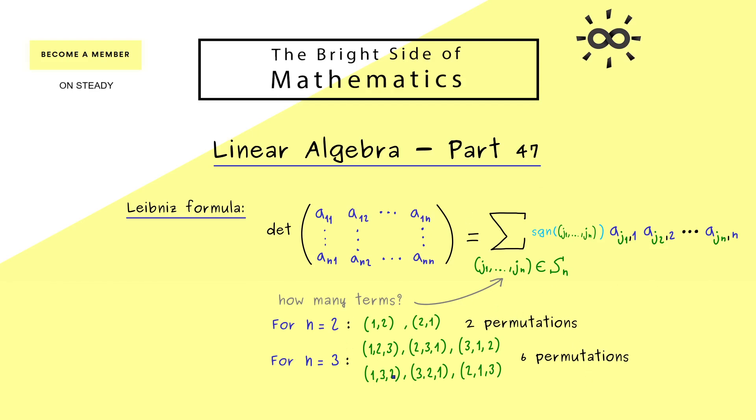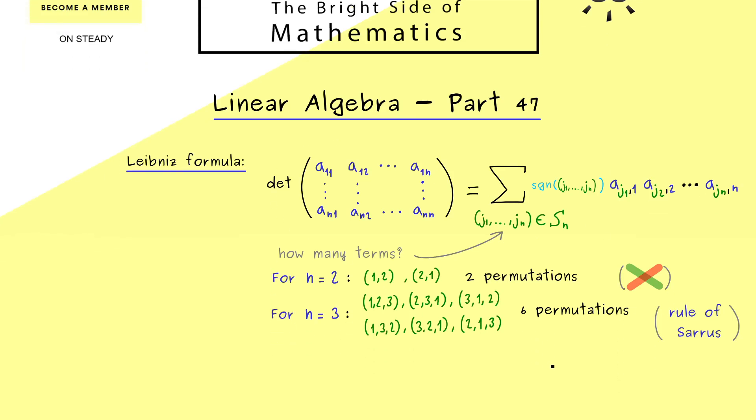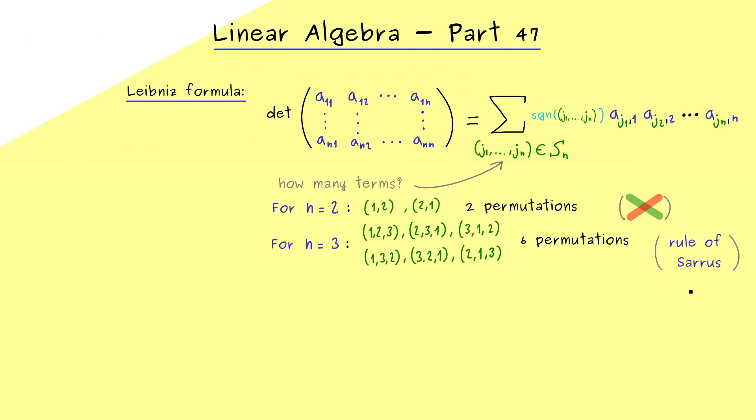Therefore it's much harder to remember a quick rule to calculate it. In fact you might remember that for the 2 times 2 case it was easy to remember. It was just about taking both diagonals with different signs. In other words you don't need the general Leibniz rule to calculate a 2 times 2 determinant. And a similar thing we have for the 3 times 3 case and we will learn that today, it's called the Rule of Sarrus.